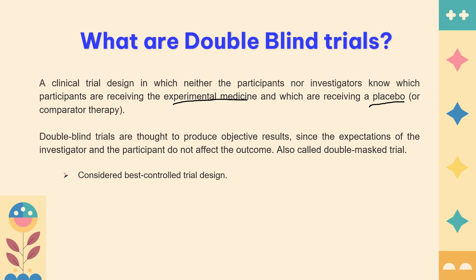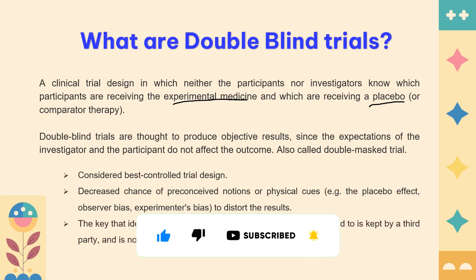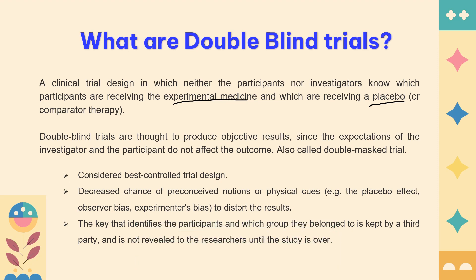Double blinded trials are used when effective control is needed in the trial design, to decrease preconceived notions or physical cues such as the placebo effect, and to avoid key identifiers. A lot of times when the investigator is blinded but the subject knows their treatment, they can reveal it to the investigator, creating bias. In double blinding, we reduce bias from both the subject and the investigator entirely.